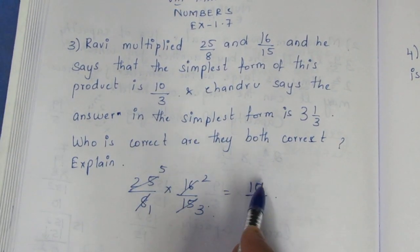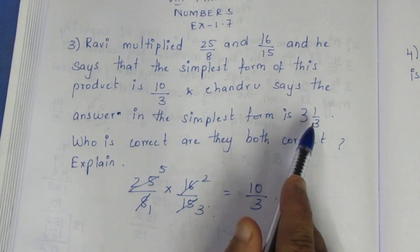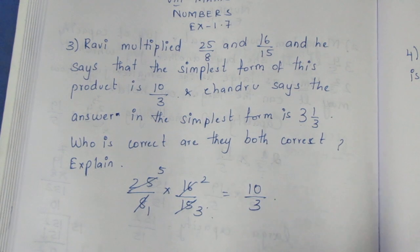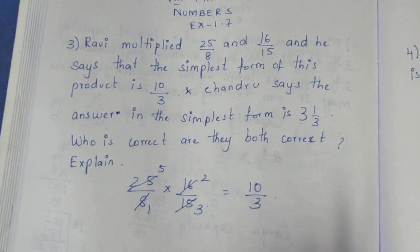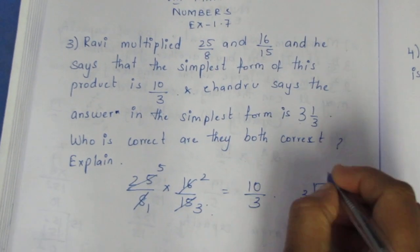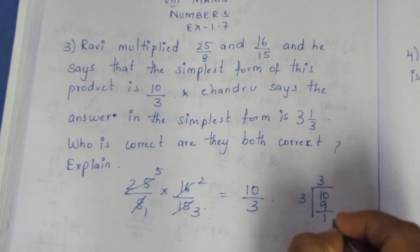We will convert this into a mixed fraction. If you divide: 3 times 3 is 9, remainder 1. Quotient plus remainder by divisor.